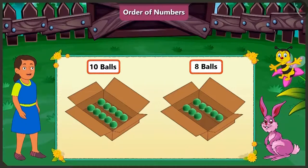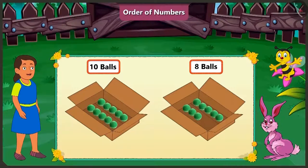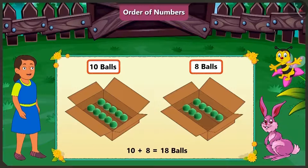Now tell me honey, what is the total number of balls in both the boxes? In both the boxes, there are a total of ten and eight, that is eighteen balls.